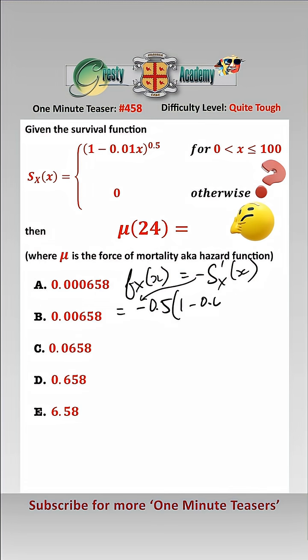1 minus 0.01x to the power of minus 0.5, and then multiply by the chain rule, which is minus 0.01.